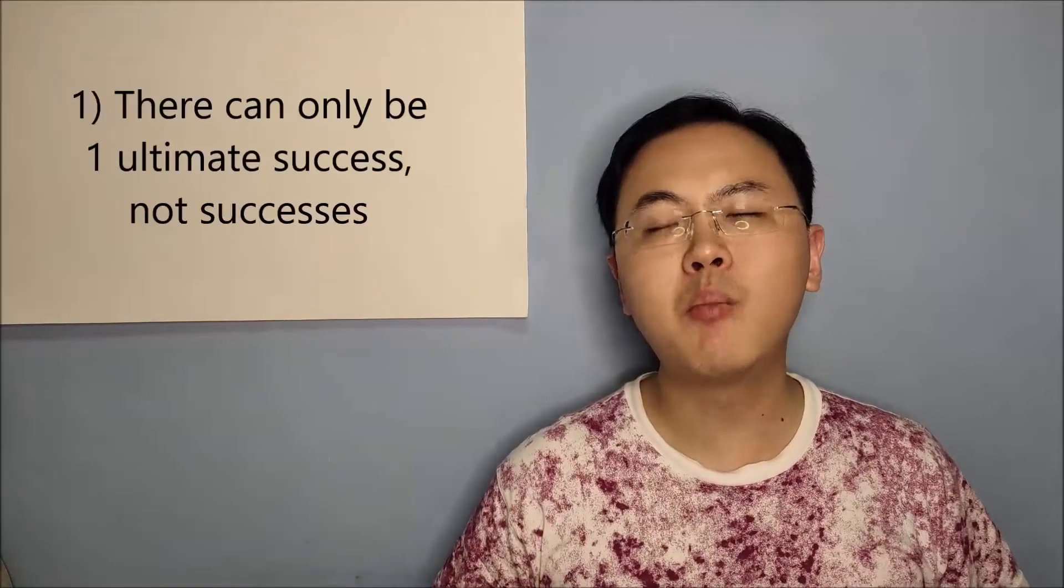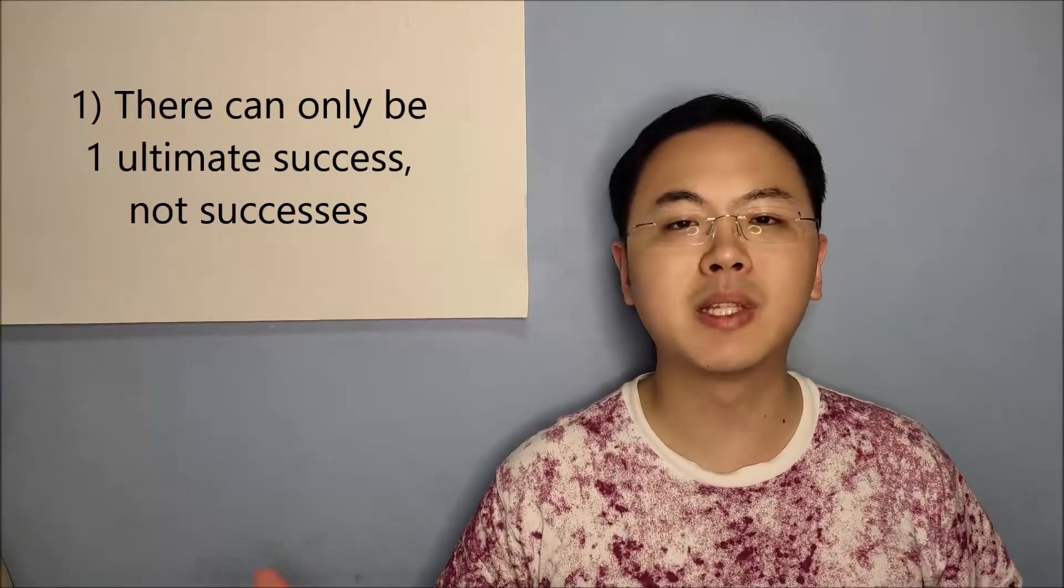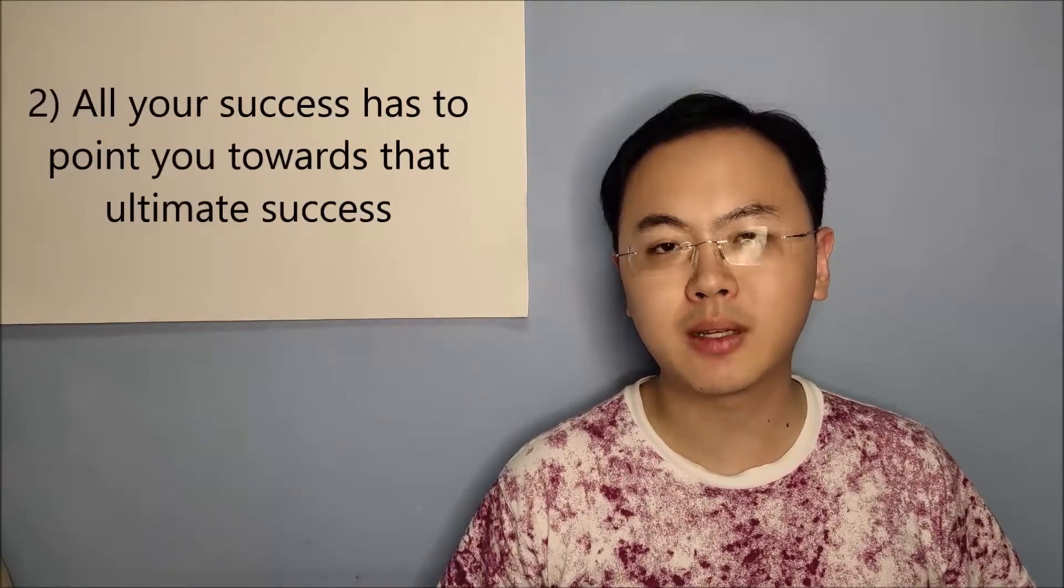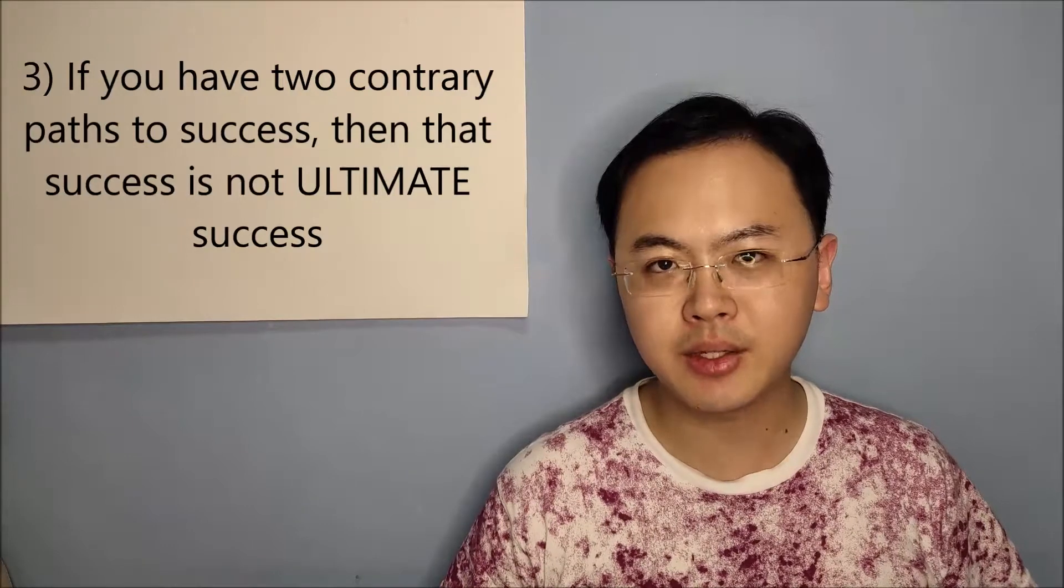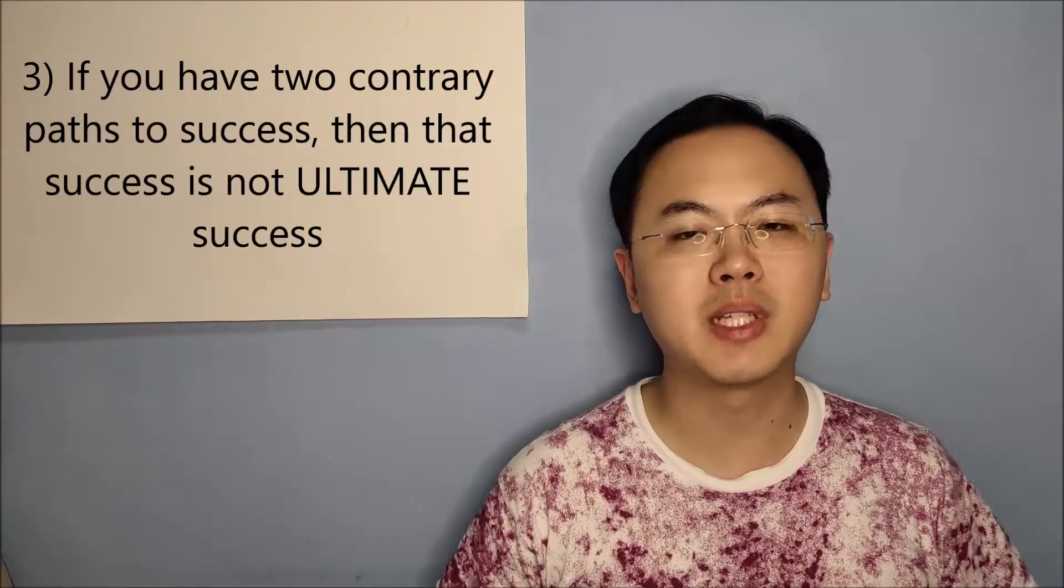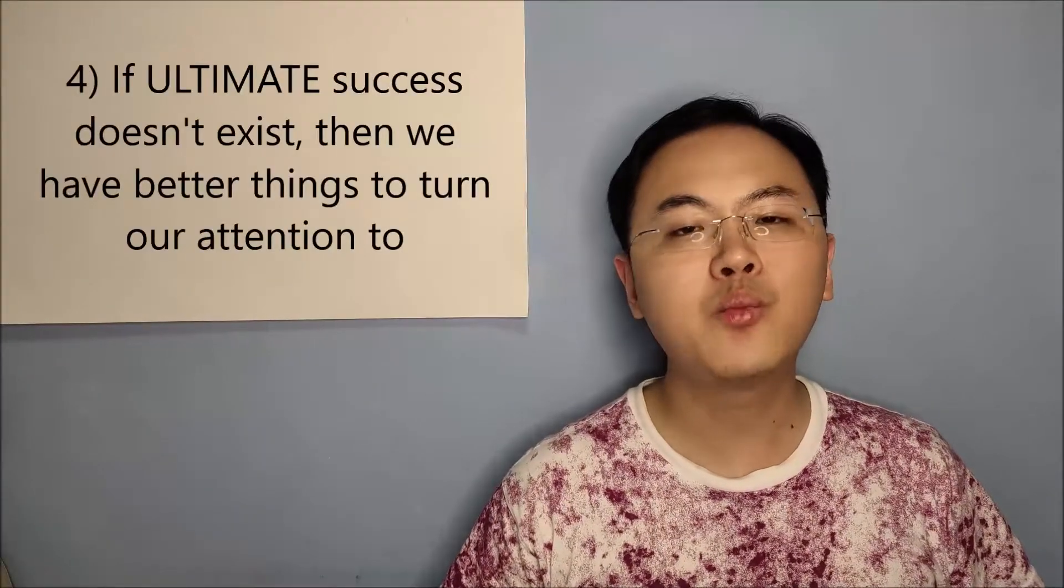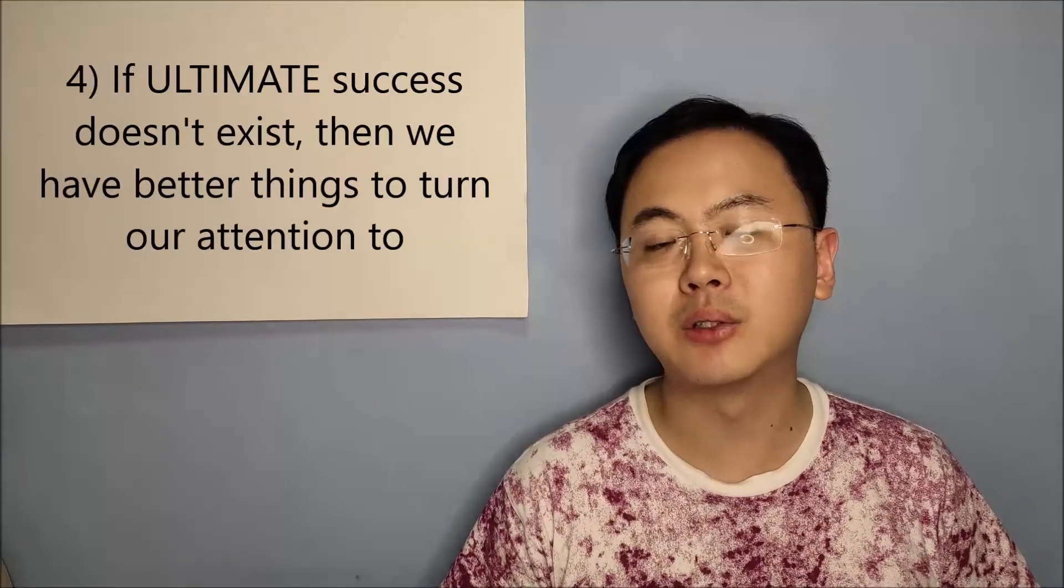So in order for this to be the case, number one, there cannot be more than one ultimate success. Otherwise, it will be ultimate successes. Which is kind of a technicality, but I'll grant it that. The next thing is that all your paths to success have to head towards it. That's the second condition. And so if you can find a contrary path to success, then it means that there is no such thing as ultimate success. So as much as this idea of having ultimate success is very captivating and is something that has motivated mankind for a very long time, if it doesn't exist, then we are wasting our time trying to find that ultimate success.